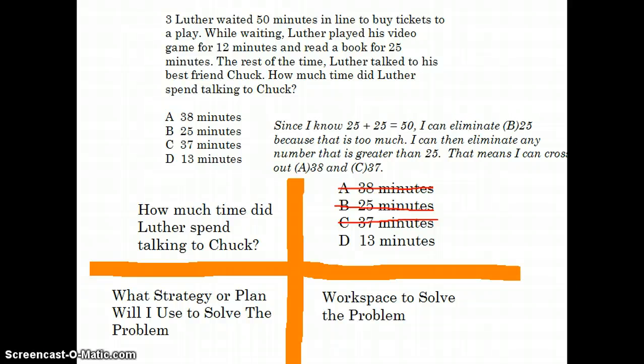So I can eliminate A, B, and C. Why? Well, because we know that 25 plus 25 is equal to 50. If Luther was in the line only for 50 minutes and we know 25 of those minutes he spent reading a book, anything that is above 25, because he did spend an extra 12 minutes playing his video game, 25 and anything above 25 can be eliminated.